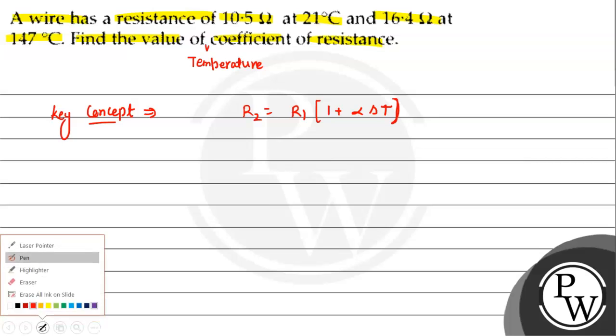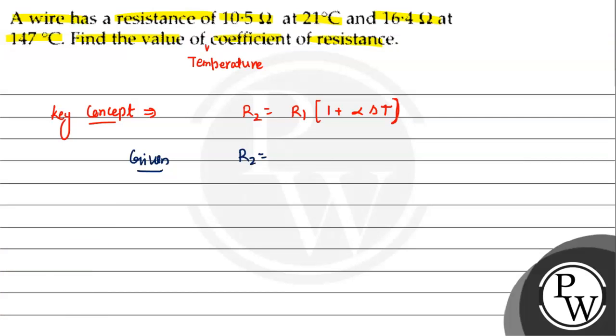Given: R2, the final resistance, is 16.4 ohm. R1, the initial resistance, is 10.5 ohm. Delta T will be T final minus T initial.